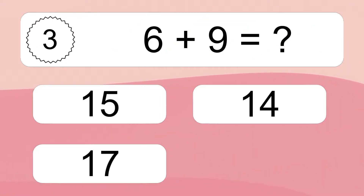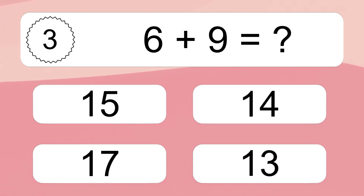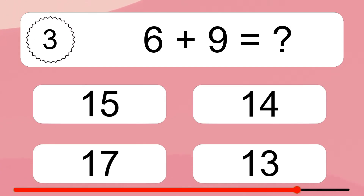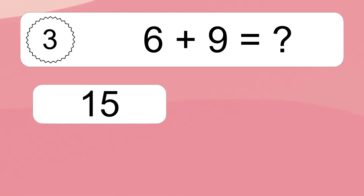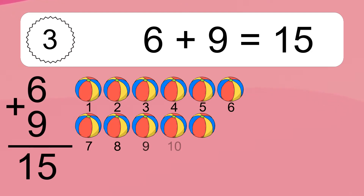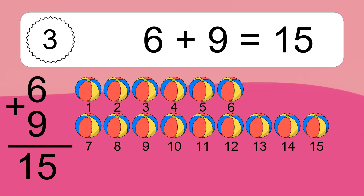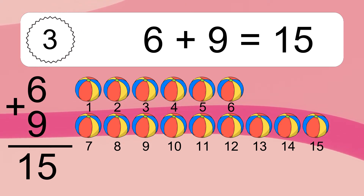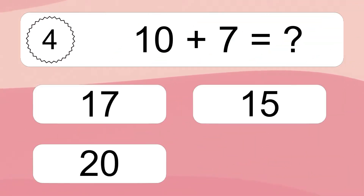6 plus 9 equals what? 6 plus 9 equals 15. Let's count it: 1, 2, 3, 4, 5, 6, 7, 8, 9, 10, 11, 12, 13, 14, 15.